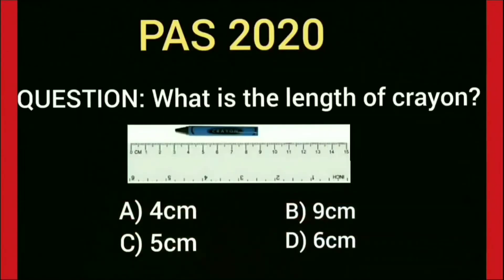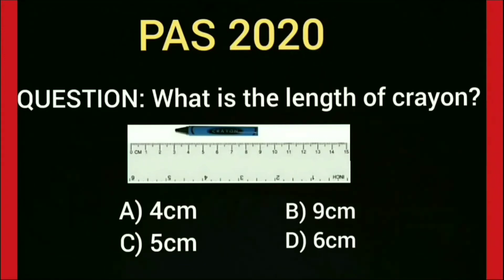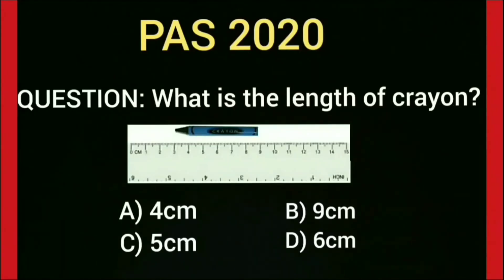Now we will discuss one more question. What is the length of the crayon? Four options are given: A — 4 cm, B — 9 cm, C — 5 cm, and D — 6 cm. Look at the picture. The length of the crayon is from 3 to 9 cm. How many cm are there in between 3 to 9 cm? Yes, 6 cm. So option D is correct, and we put a tick on option D.